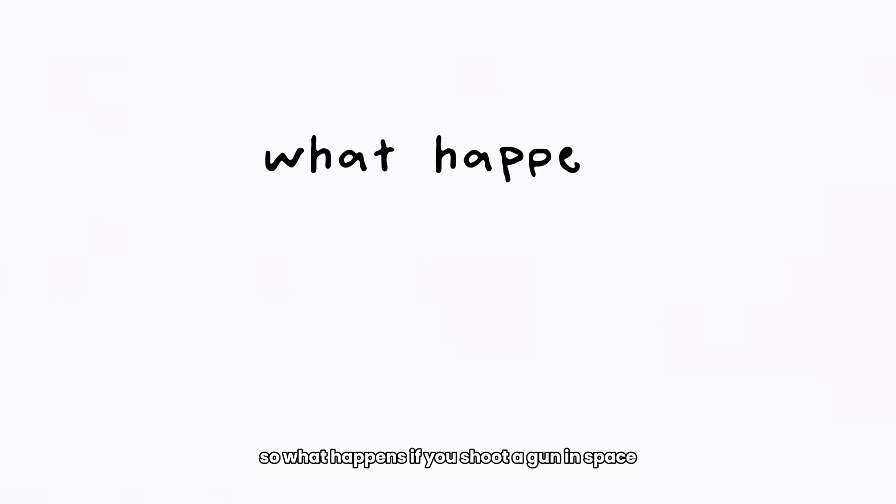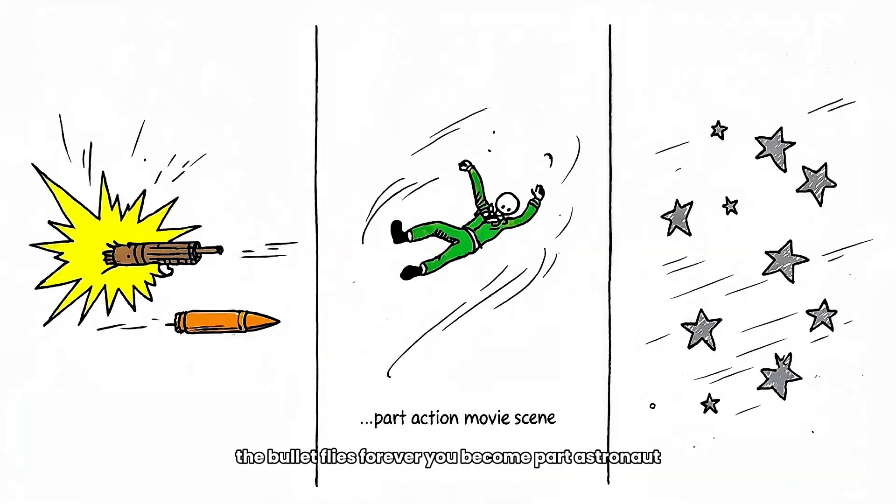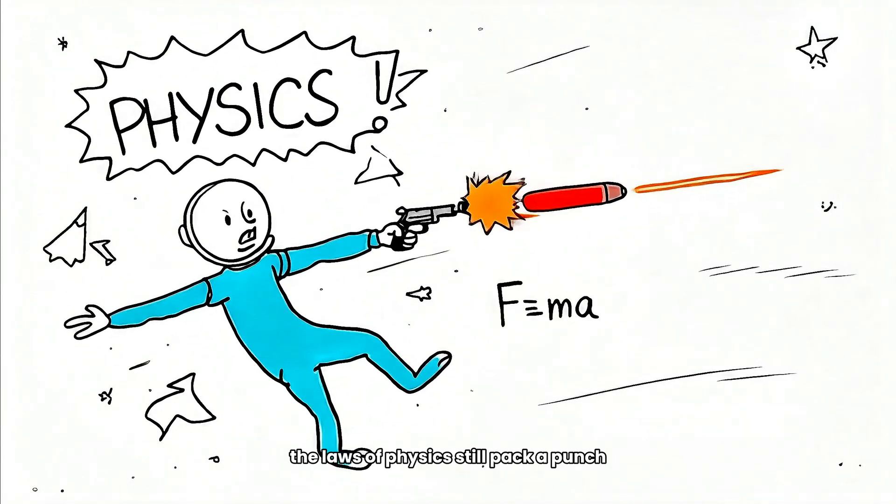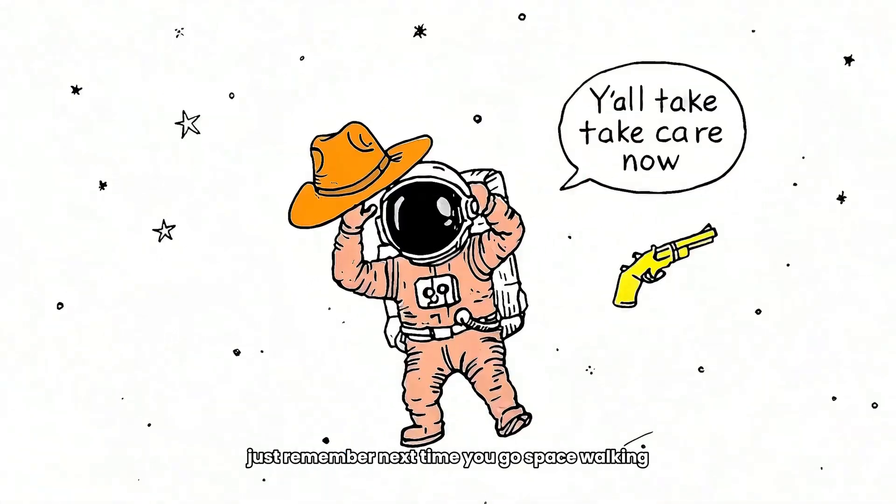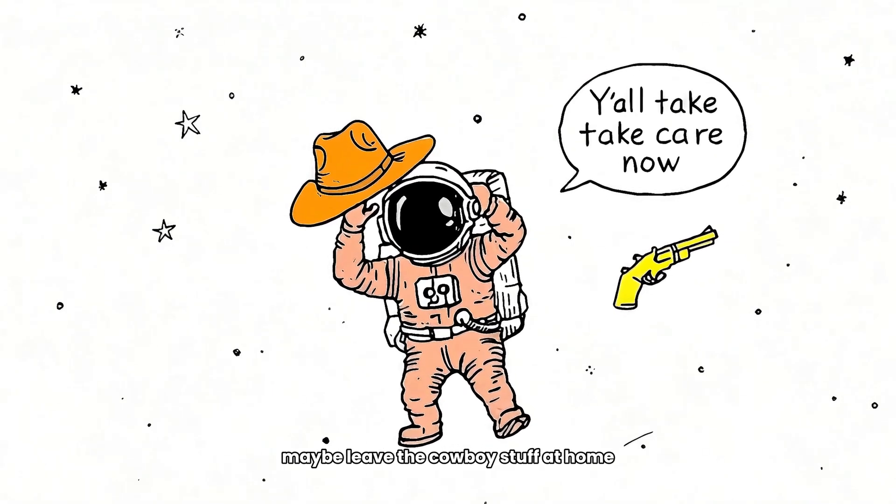So, what happens if you shoot a gun in space? It fires. You drift. The bullet flies forever. You become part astronaut, part action movie scene, and part reminder that even in the vacuum of space, the laws of physics still pack a punch. Just remember, next time you go spacewalking, maybe leave the cowboy stuff at home.